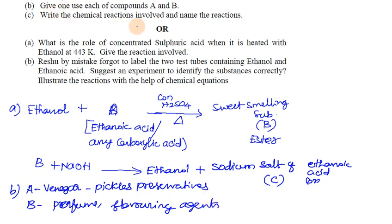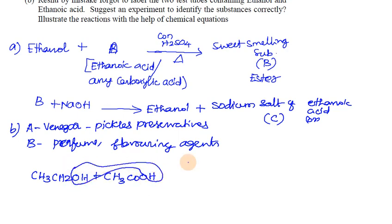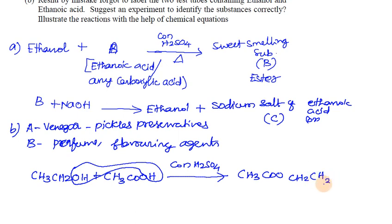Chemical reactions involved: First, ethanol (CH3CH2OH) plus ethanoic acid (CH3COOH), in the presence of concentrated sulfuric acid and heat, gives an ester plus water. This is called an esterification reaction.